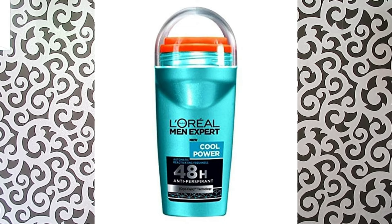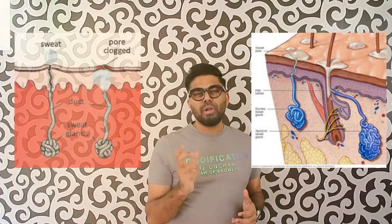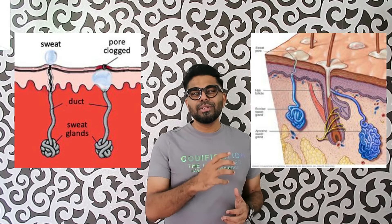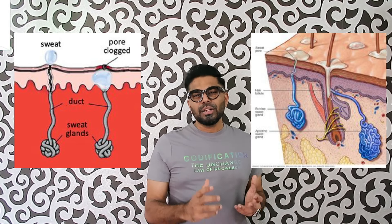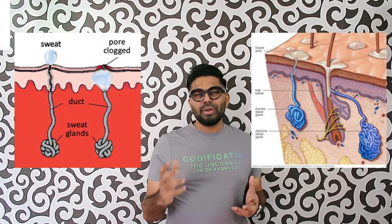Sweat is different. Anti-perspirant is very much related to the aluminum content. The aluminum content helps you with anti-perspirant — it works on the sweat glands. It does not just mask the smell; it actually addresses the sweat. It is not just a perfume or deodorant — it is the use of anti-perspirant.